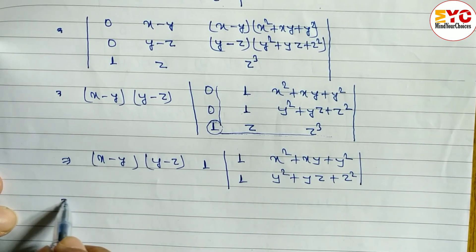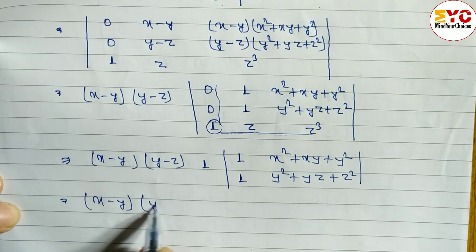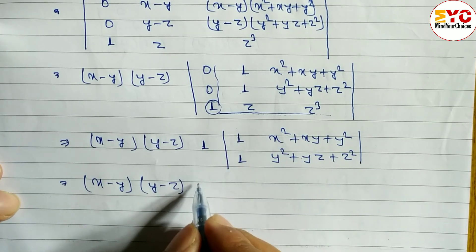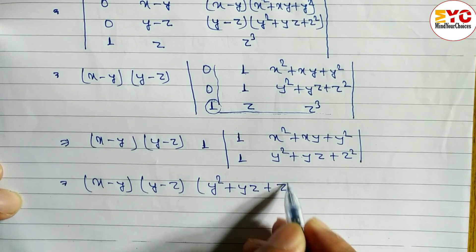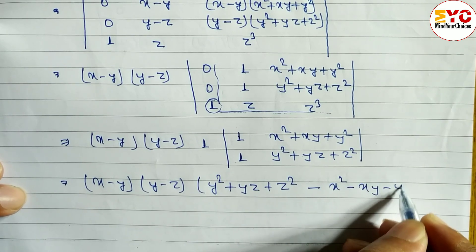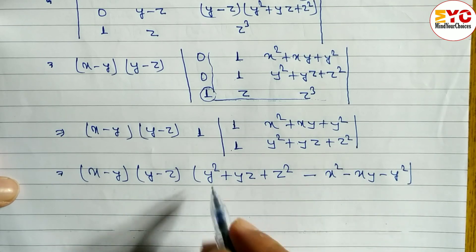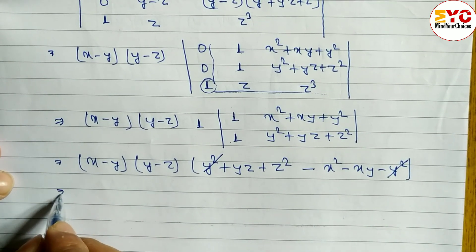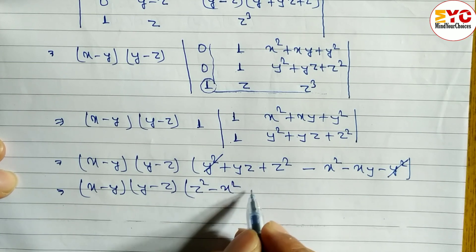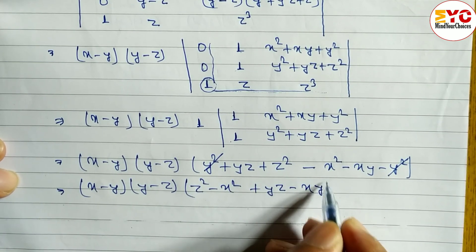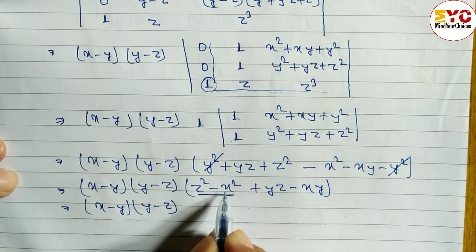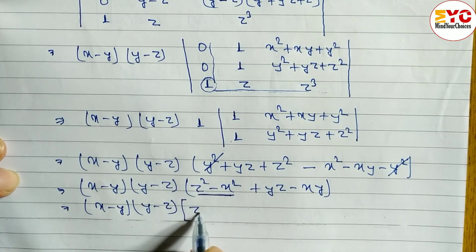So we have (x minus y)(y minus z) times the determinant of that 2×2 matrix. The determinant gives: 1 × (y² + yz + z²) minus 1 × (x² + xy + y²). This equals y² + yz + z² minus x² minus xy minus y². The y² terms cancel, leaving: z² minus x² + yz minus xy.